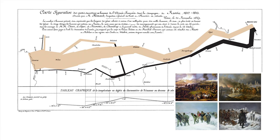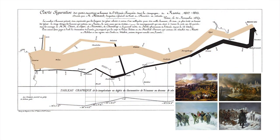An army of 700,000 strong — the largest army ever assembled up to this point — led by Napoleon, who many considered to be the most brilliant general ever lived. This army invaded Russia. Won each battle. Didn't lose a single battle. However, only 40,000 came back. One-twentieth of that army. What happened? This visualization tells the story vividly.